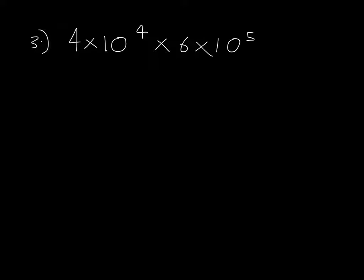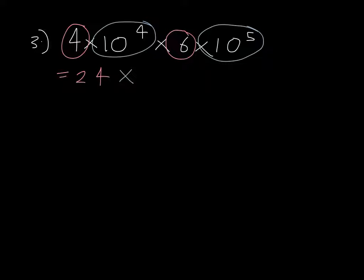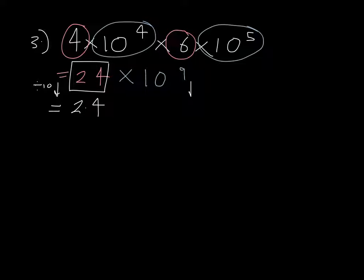Question 3: 4 times 10 to the 4 multiplied by 6 times 10 to the 5. We do 4 multiplied by 6, which gives us 24. We then do 10 to the 4 multiplied by 10 to the 5, giving us 10 to the power of 9. Now, this answer is not in standard form because 24 is greater than 10. So we rewrite this as 2.4 — we've divided by 10 — which means we multiply the power part by 10, giving us 2.4 multiplied by 10 to the power of 10 as our final answer.